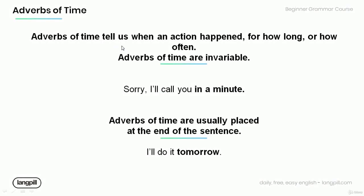Adverbs of time tell us when an action happened, for how long, or how often. Note that adverbs of time are invariable. Have a look at the example: 'Sorry, I'll call you in a minute.' The adverbial phrase 'in a minute' tells us when I'll call. Note that adverbs of time are usually placed at the end of the sentence, as in: 'I'll do it tomorrow.'